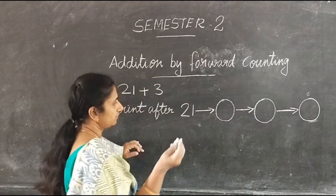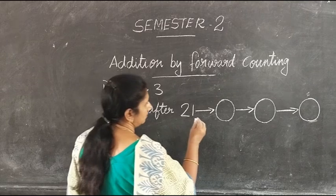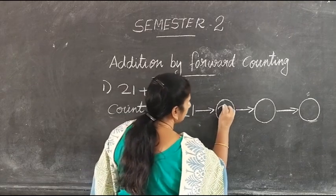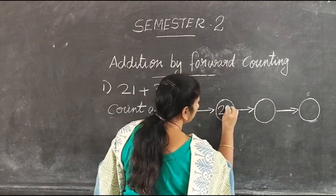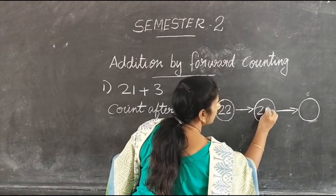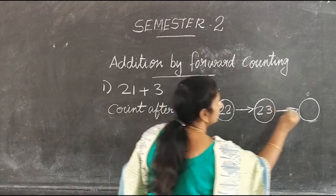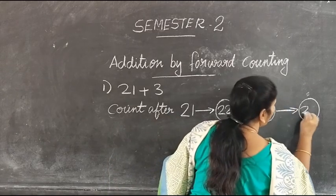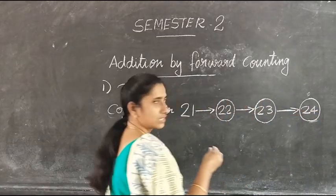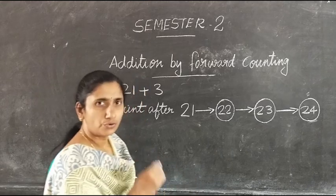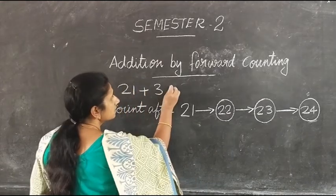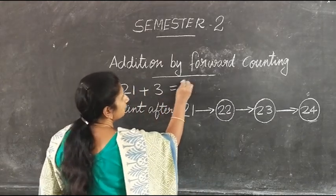And count on from 21: 22, 23, 24. Now we got the number 24. So our answer is 24.